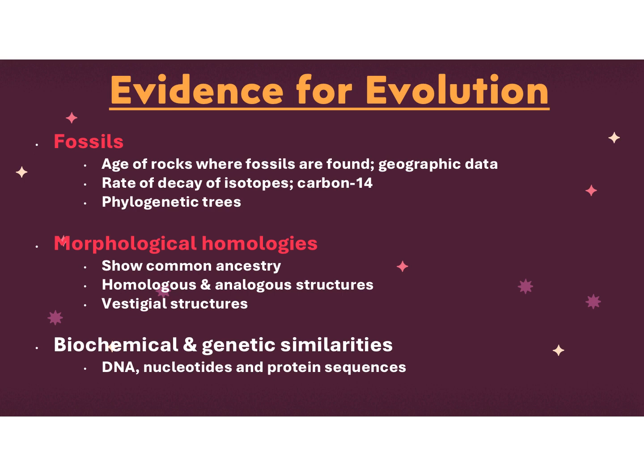Morphological homologies, homologous and analogous structures, and vestigial structures show common ancestry. Things we used to have — like we used to have a tail, so we have remnants of a tailbone — show how we have changed over time. The big one is biochemical genetic similarity: the fact that we all have the same DNA, nucleotides, and protein sequences, giving rise to the idea that we all had a common ancestor.